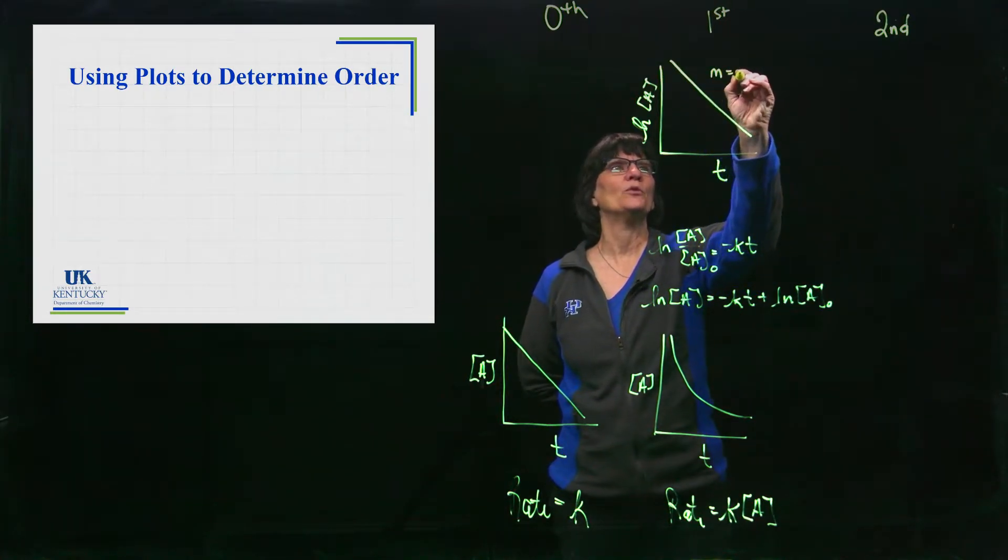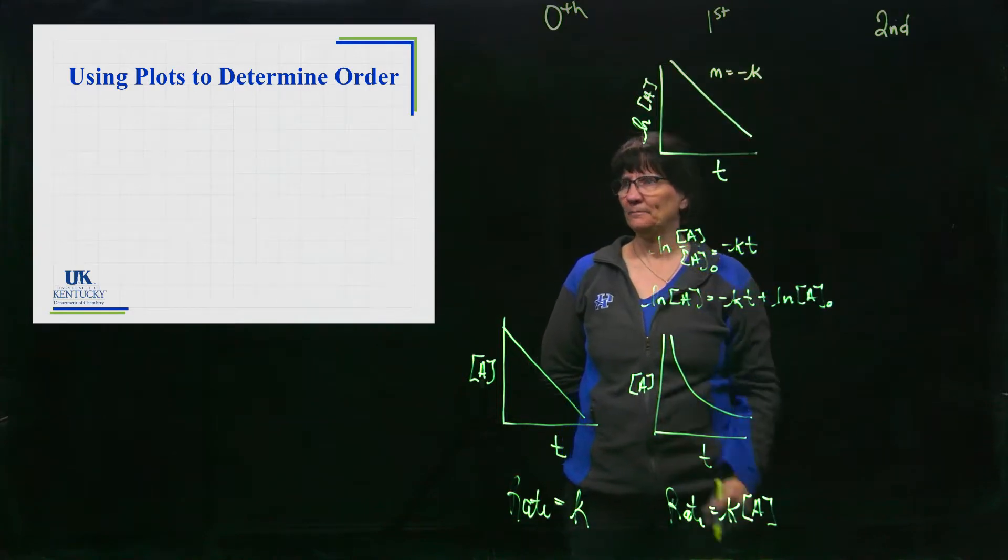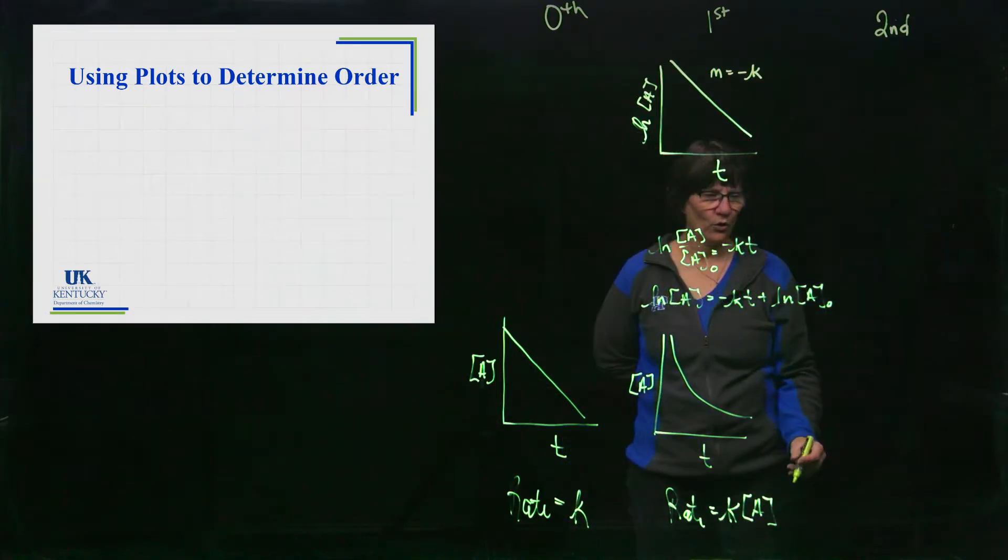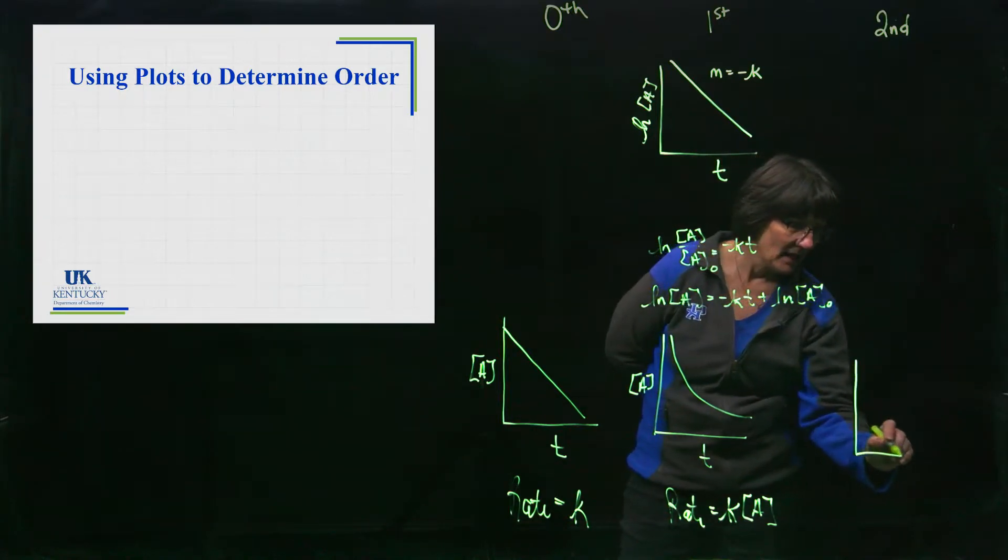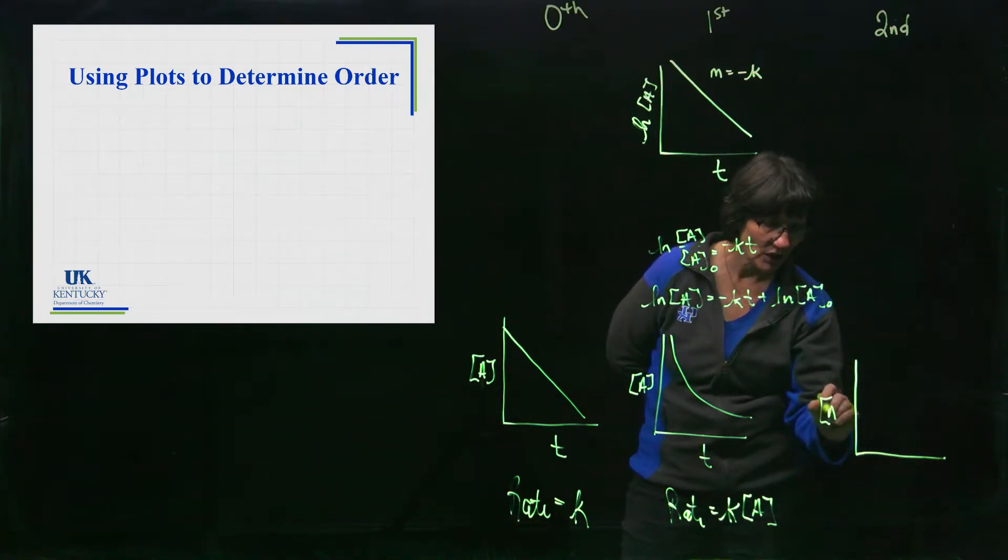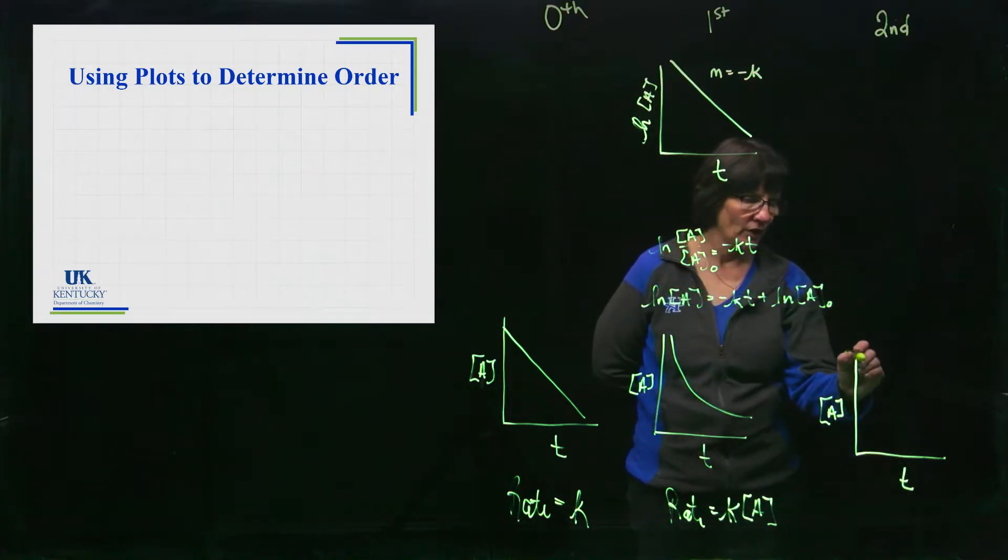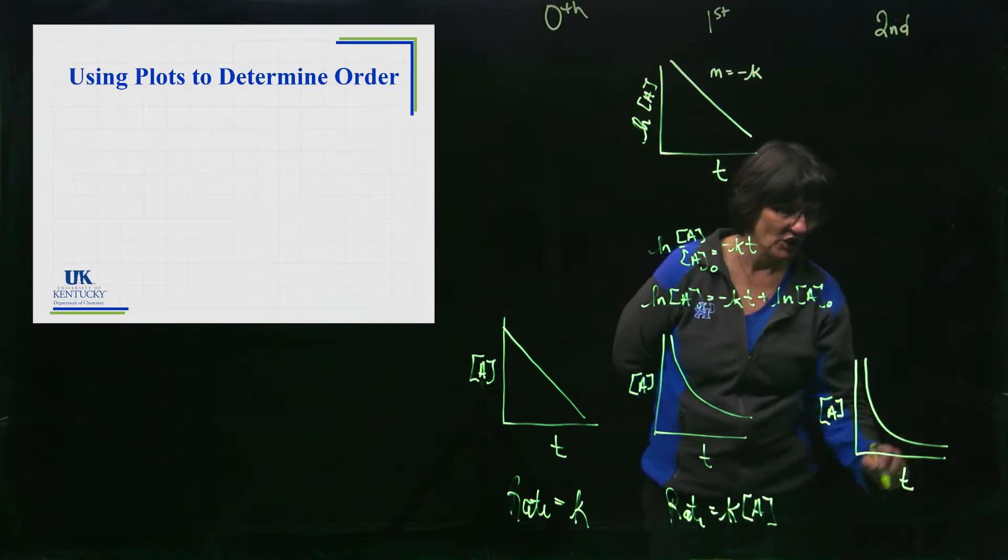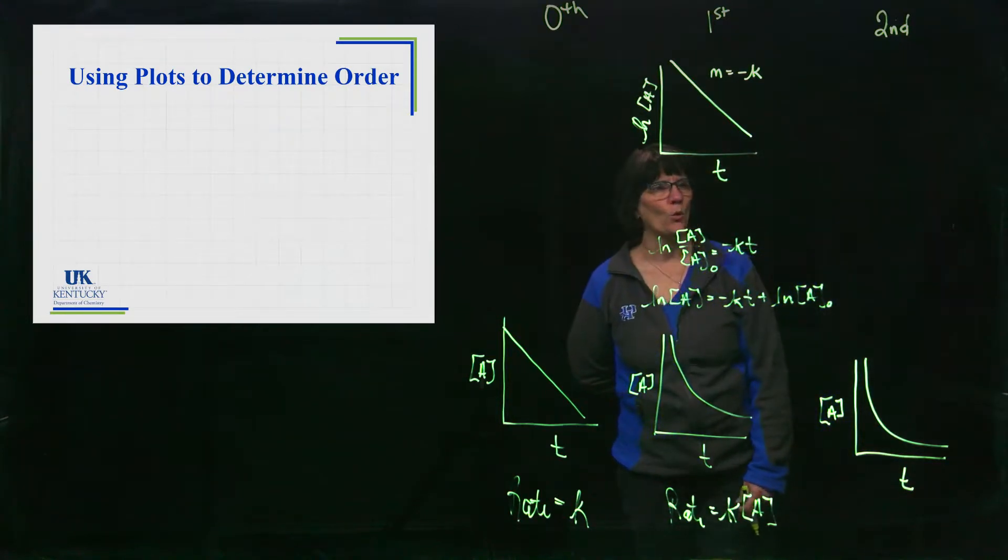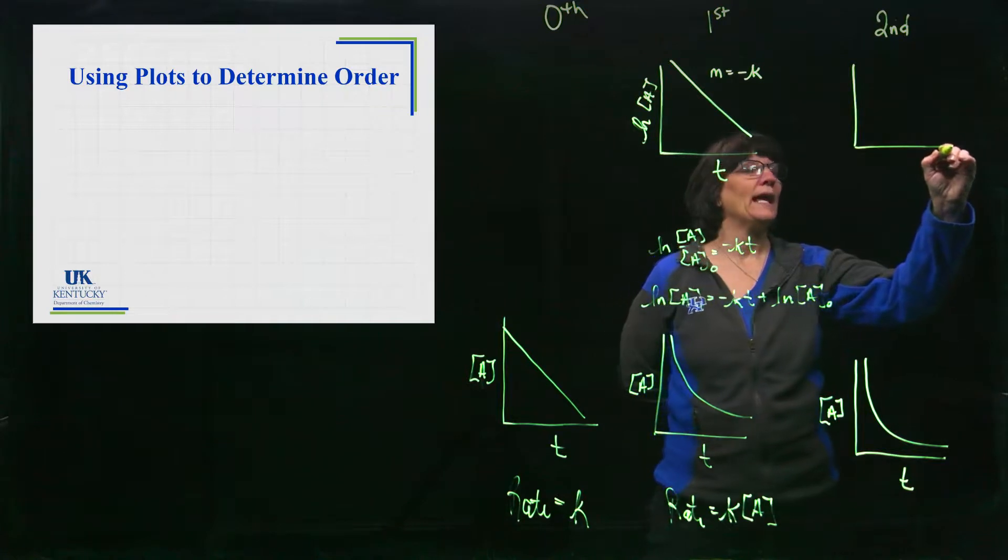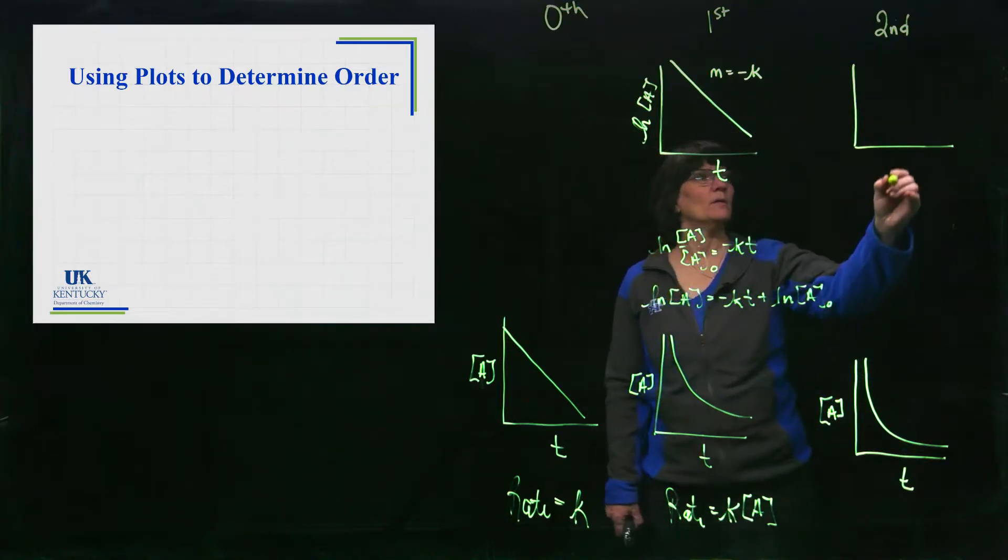Let's go on to the second order. If we were to plot concentration versus time for this guy, we would also get a nonlinear relationship, but it drops off a little bit more rapidly. And then if we were to want a linear relationship, what would we have to plot?